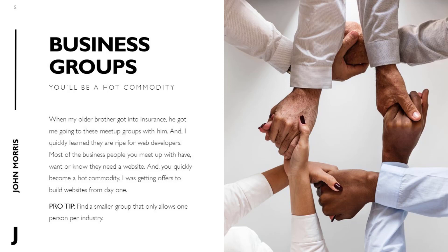My pro tip here is to find a smaller group that only allows one person per industry. A lot of groups do this — one insurance agent, one realtor, one web developer. If you can get into one of those groups of 20 to 30 people, that small group can be more than enough to jumpstart your career. A high percentage — 50, 75, 80% of those people — can want you to do something for them web development wise. It can be a really quick and easy way to start getting work and then build referrals from that, since business meetup groups are already primed for referrals.